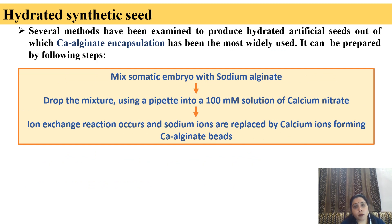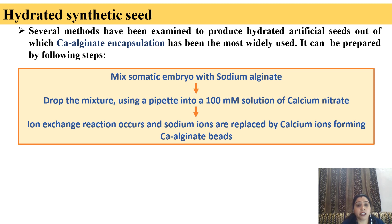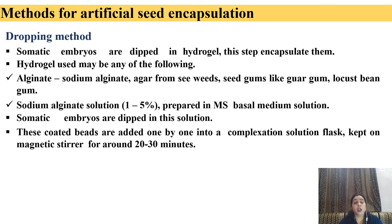Hydrated synthetic seeds: Several methods have been examined to produce hydrated artificial seeds. Out of which, calcium alginate encapsulation has been the most widely used. We can prepare it by using the following method: mix somatic embryos with sodium alginate. Drop the mixture using a pipette into a solution of calcium nitrate. An ion exchange reaction occurs and sodium ions form calcium alginate.